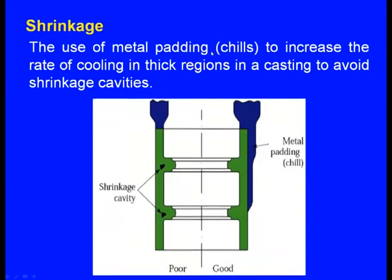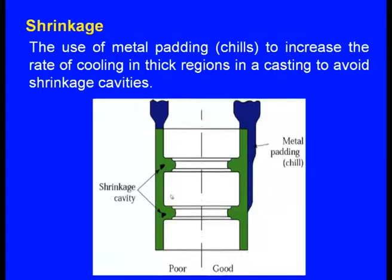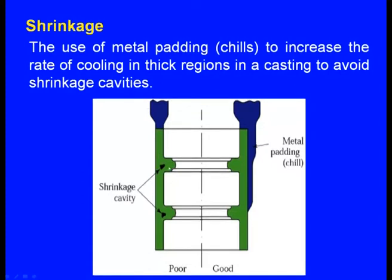We can also use metal padding or chills to increase the rate of cooling in thick regions of a casting to avoid shrinkage cavities. In a case where the riser feeds the bottom portion and a region has excess molten metal, once the connecting section solidifies, the molten metal from the riser cannot reach that region for feeding, resulting in a shrinkage defect.